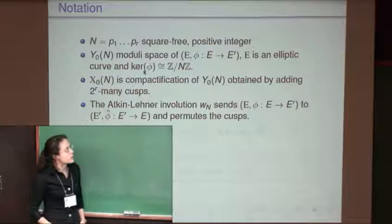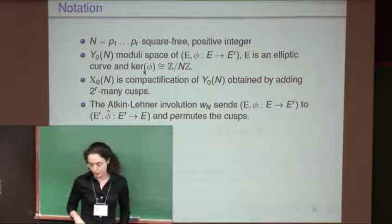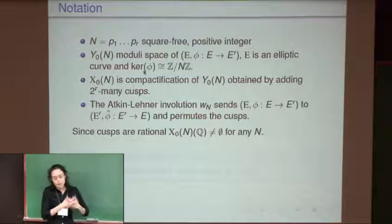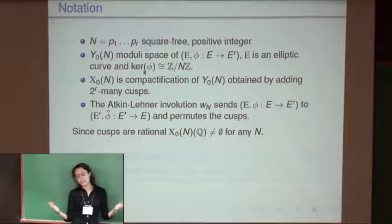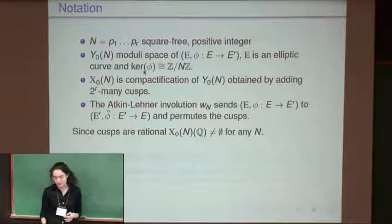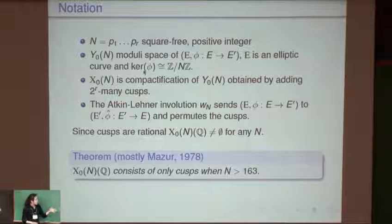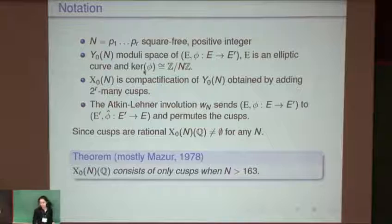The Atkin-Lehner involution acts on the affine piece of our curve, and on the cusps it simply permutes them — importantly, none of the cusps are fixed by this involution. As soon as you have an algebraic curve, you wonder about its rational points; if it's a moduli space, those rational points give information about the objects parameterized by the curve. The rational points of X₀(N) are non-empty for any N because the cusps are there. Thanks to Mazur's celebrated result, we know that cusps are the only rational points if N is large enough, and as a corollary, there are only finitely many torsion subgroups of elliptic curves over Q.